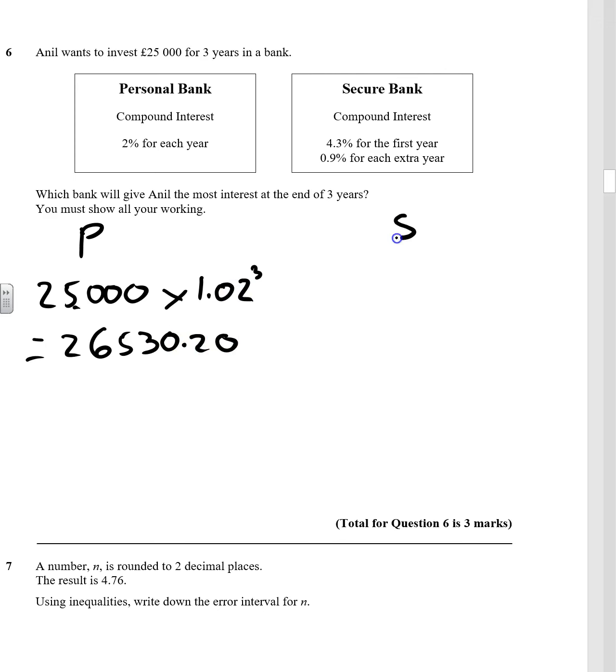Now, let's do secure banking. Compound interest, so it is £25,000, but only for one year of 1.043. But then for extra year, 0.9%, so we need to multiply that by 1.009 squared. It's squared because we need two years. We're still going for the three-year investment, which gives us £26,546.46.